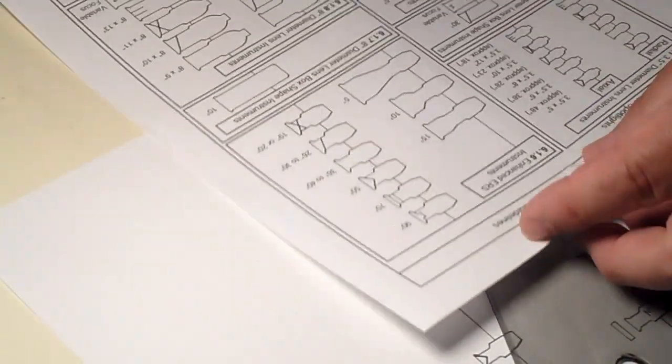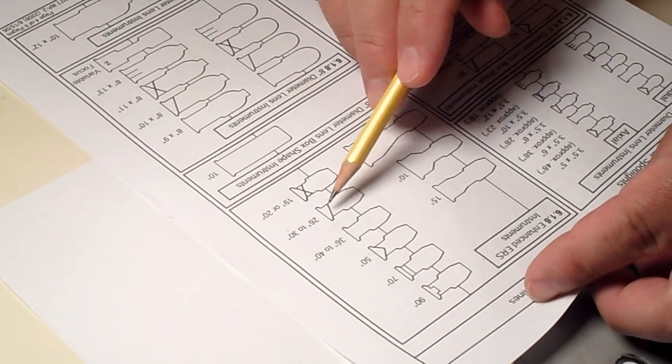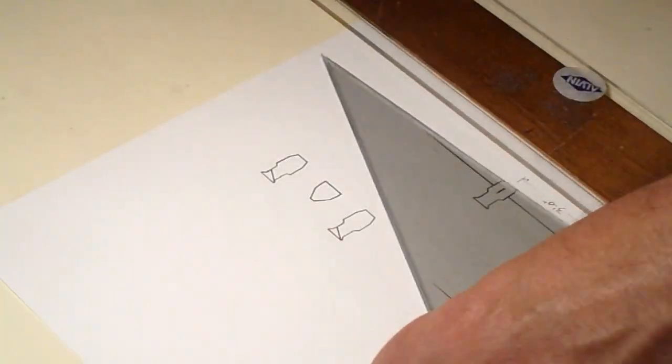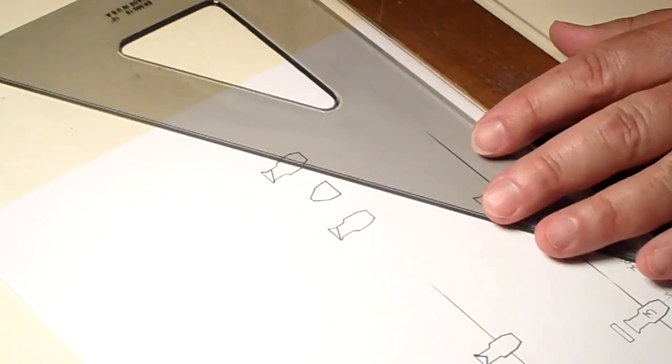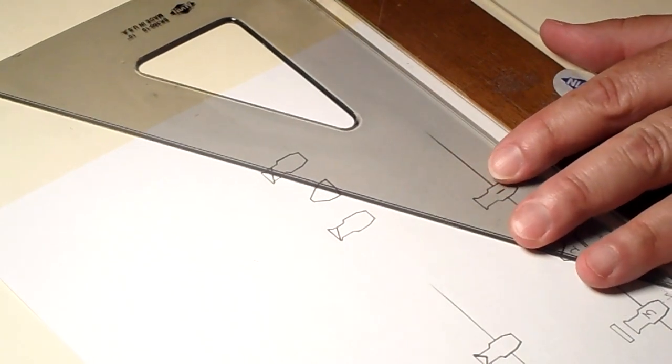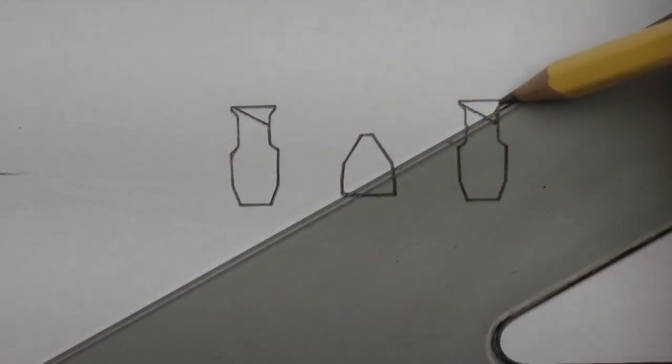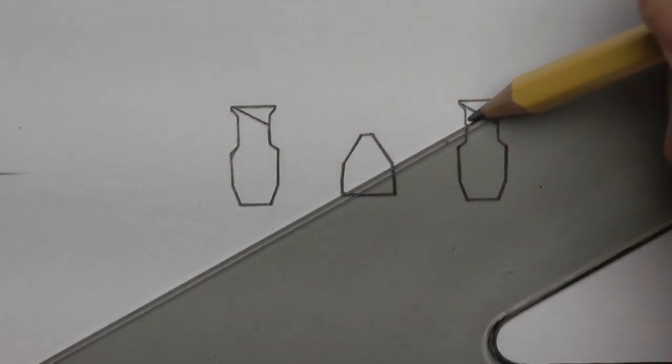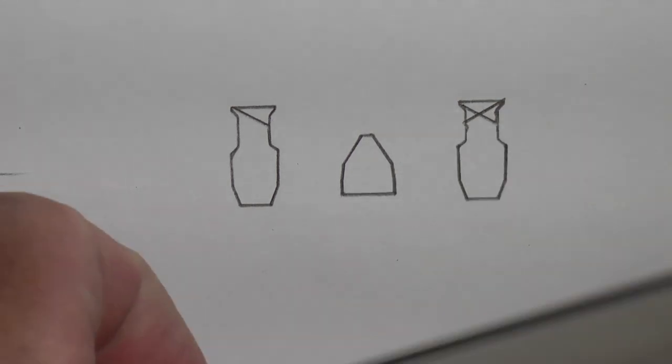Now this one here, let's say we want to make it a 19 degree instead of a 26 degree. We flip the triangle over and put the other line to make the X, just like that.